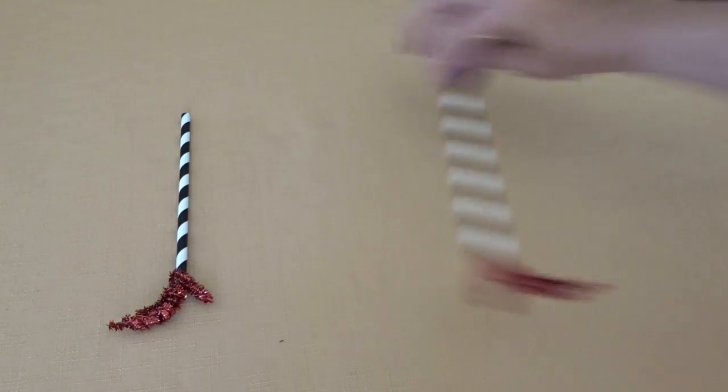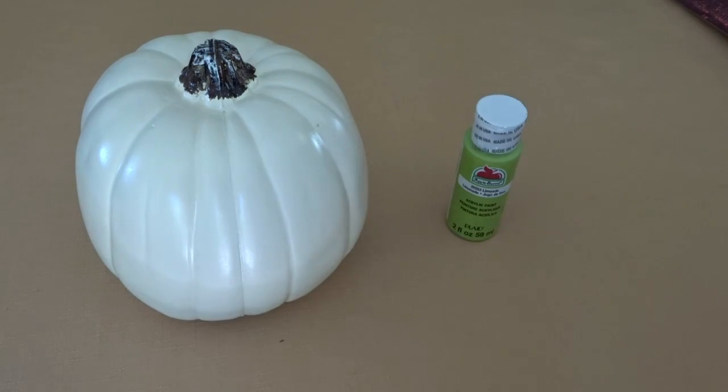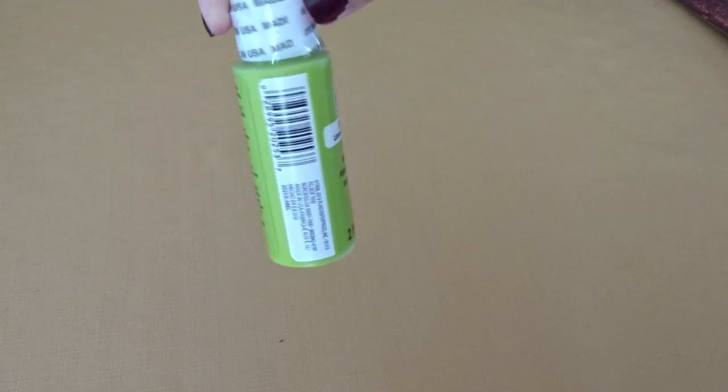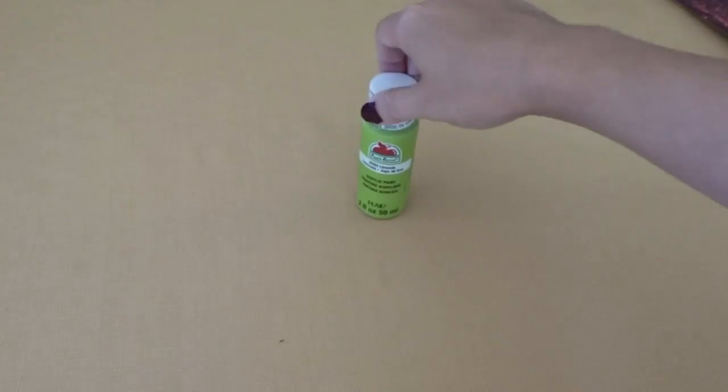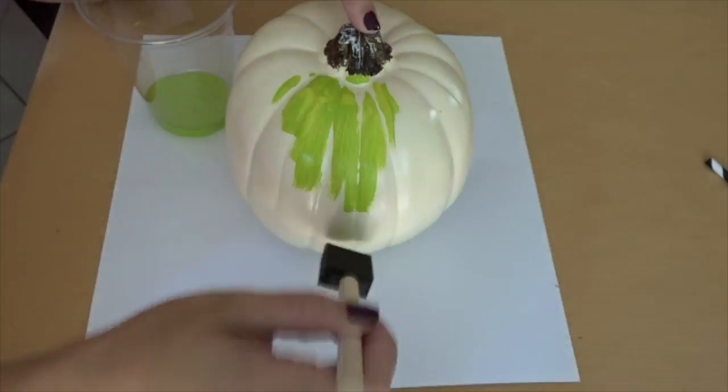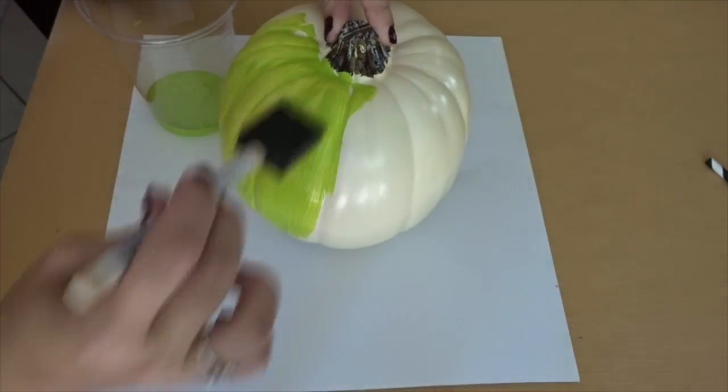Let's set these aside and start painting our pumpkin. I chose Apple Barrel's Limeade. Any green will do. There's some glow-in-the-dark ones, which would be super fun for kids. So we just start painting with a simple foam brush.